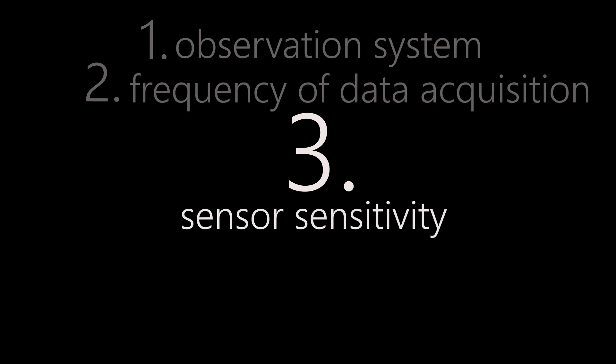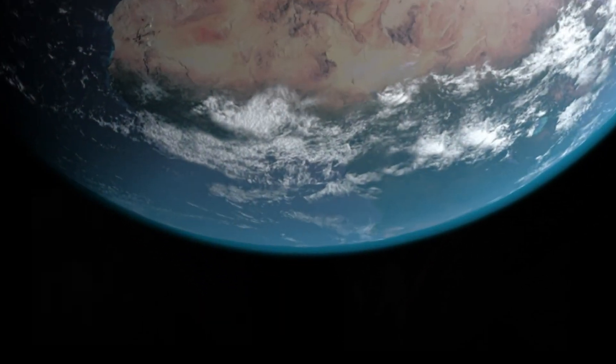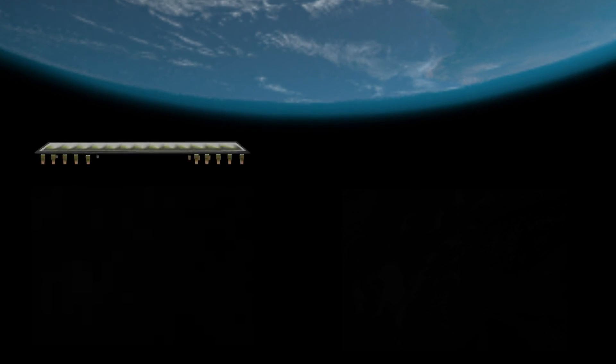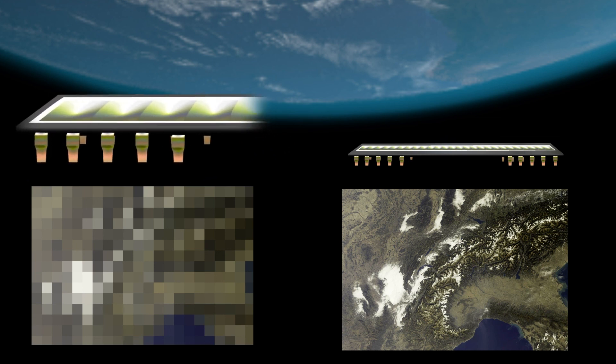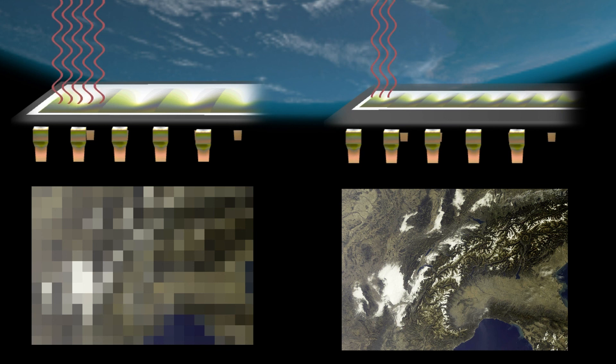Which wavelengths need to be recorded? The sensors that receive the radiation reflected by the Earth must be smaller with increasing spatial resolution. This also reduces the amount of radiation that strikes these so-called CCD sensors, which can lead to certain wavelength ranges being almost or completely impossible to record.